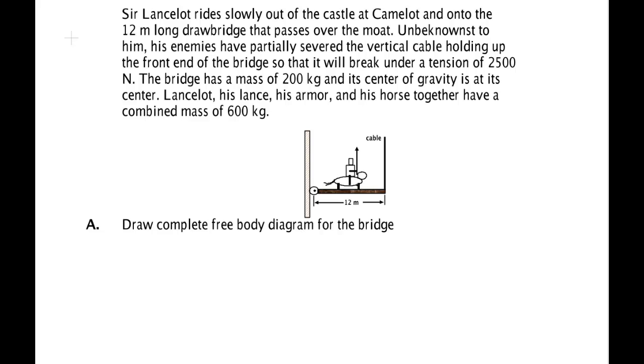Sir Lancelot rides slowly out on his horse on a castle at Camelot and onto the 12 meter long drawbridge that passes over the moat. Unbeknownst to him, his enemies have partially severed the vertical cable holding up the front end of the bridge so that it will break under a tension of 2,500 newtons.